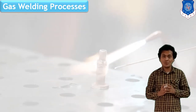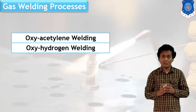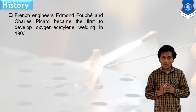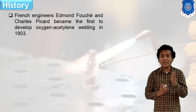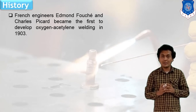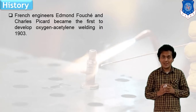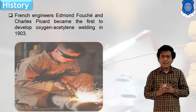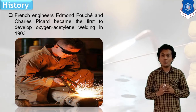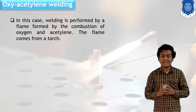Oxy-acetylene gas welding is a very important and familiar process. Another process is the oxy-hydrogen welding process. Welding is a very old process and the concept of welding is to generate heat and join two plates together. This gas welding was first developed and used by French engineers. In oxy-acetylene gas welding, two gases — oxygen and acetylene — are generally used.